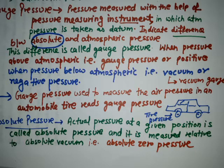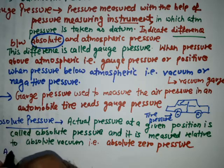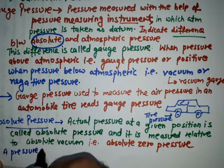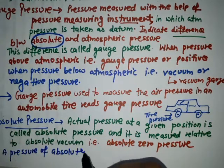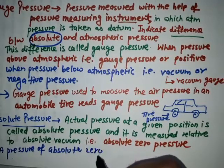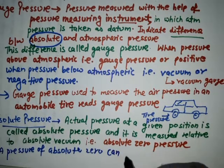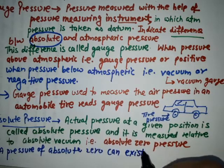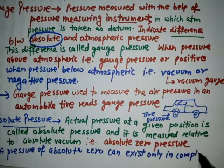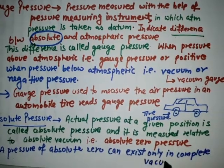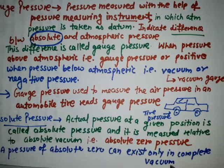A pressure of absolute zero can exist, and we write this as absolute zero. This exists in a complete vacuum.